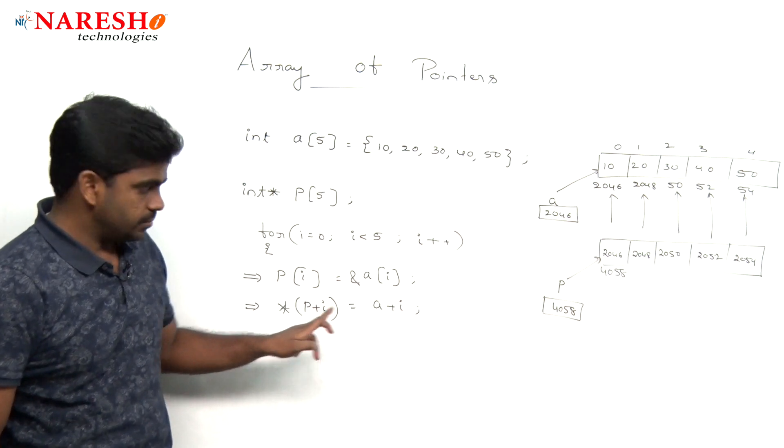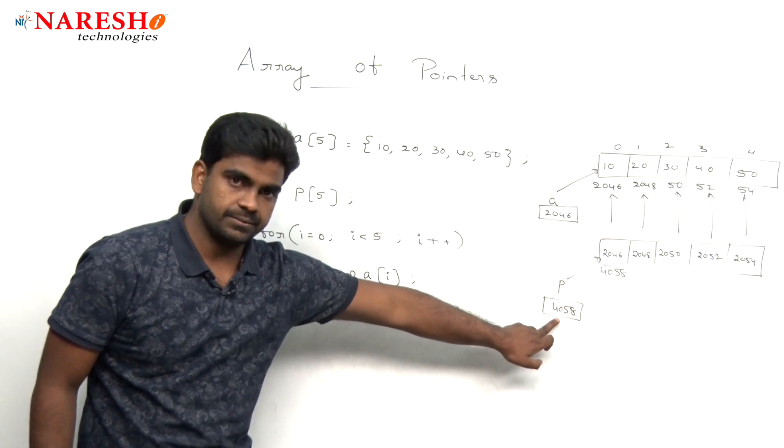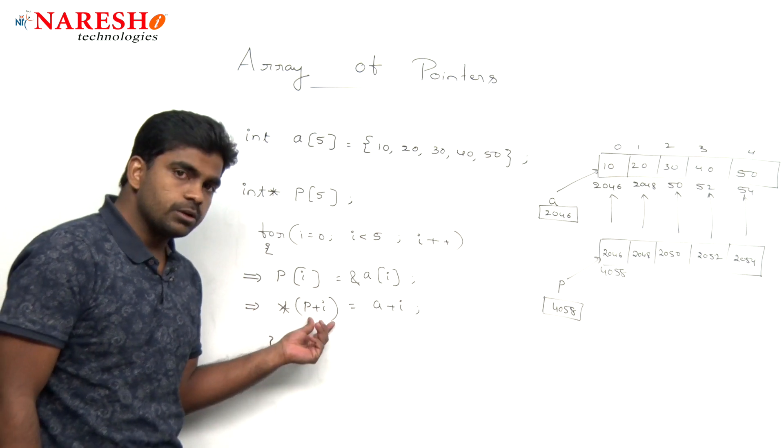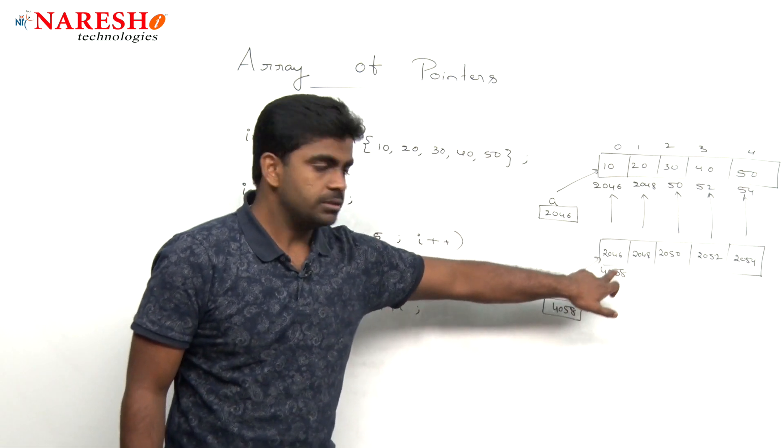What is that p value? It is 4058. 4058 plus 0, 4058 only. Pointer to 4058 means what? This is the location.